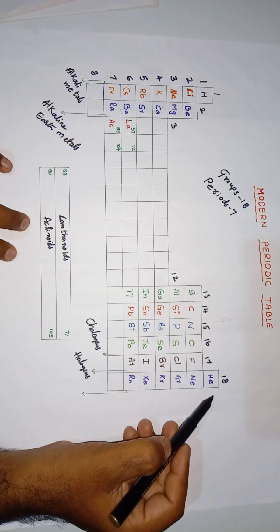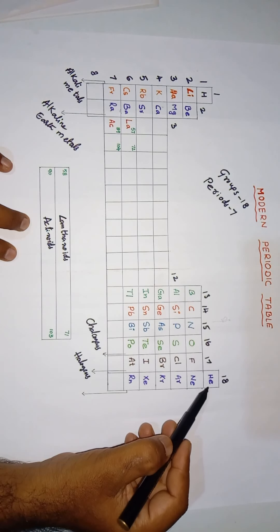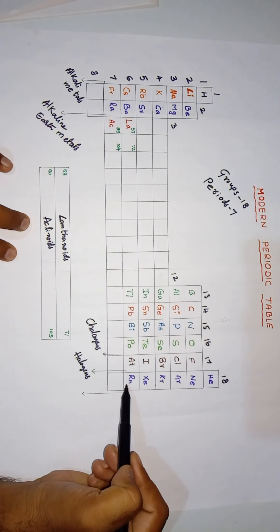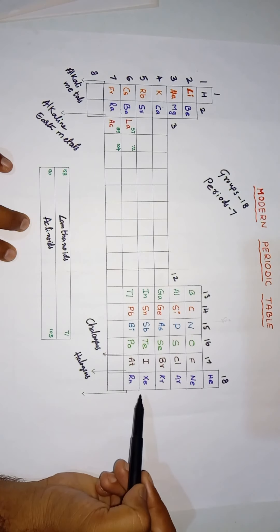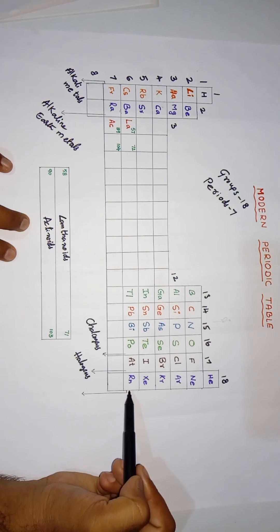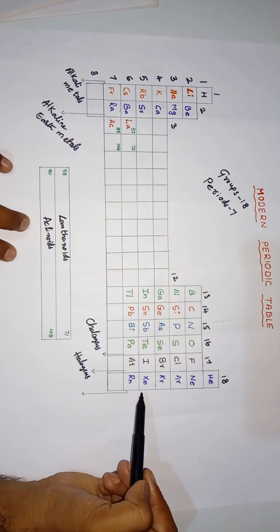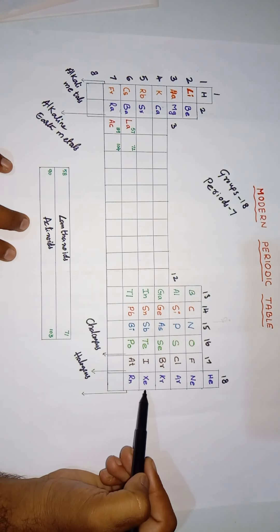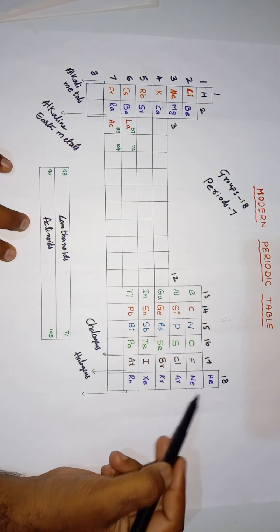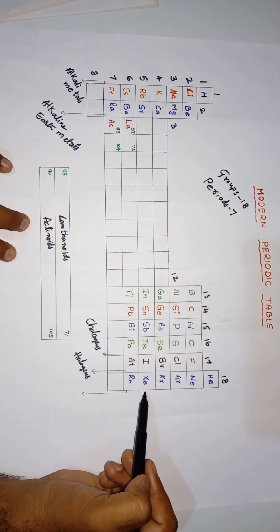Group 18 elements — helium, neon, argon, krypton, xenon, and radon — are called noble gases. Noble gases are the least reactive elements in the periodic table; they do not participate in chemical reactions and generally do not form compounds. The exception is xenon, which is the most reactive of the noble gases and the only noble gas that can form compounds.